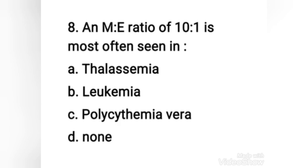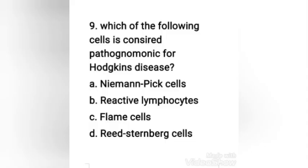Next question: a myeloid-to-erythroid ratio of 10:1 is most often seen in — thalassemia, leukemia, polycythemia vera, or none of these? The right answer is option B, leukemia.